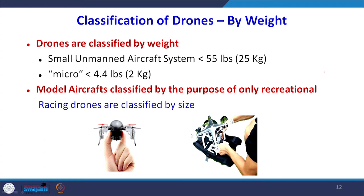If we consider drones on the basis of their weight: they are available in different weights — the weight of the drone itself plus the payload they can carry. They are classified according to the weight of the drone system only, without payload. There are small UAVs which are less than 25 kg, micro UAVs which are less than 2 kg, and model UAVs used for recreational purposes.